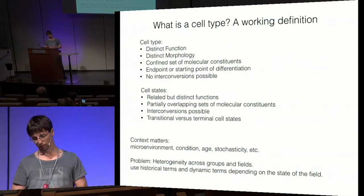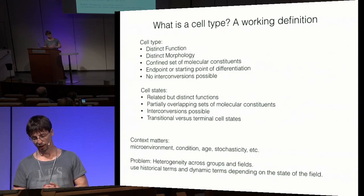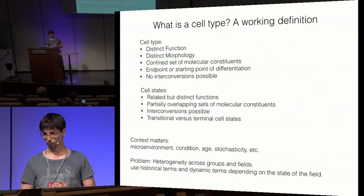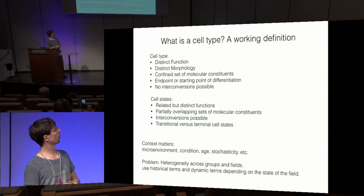This is a simple working definition, but we have to be aware of all the concerns. For example, the microenvironment and context matter — what cells a particular cell interacts with may determine its state or type. Condition, age, stochasticity of gene expression, and so forth are all factors we have to keep in the back of our minds.